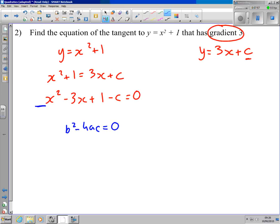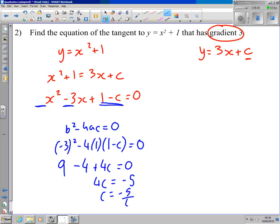So a is 1, b is -3, and c is 1 - c. So it's (-3)² - 4(1)(1 - c) = 0. Breaking out the brackets, that's 9 - 4(1) will be -4, minus 4 times negative c will give me +4c. So that's 5 + 4c. So that's 9 - 4 + 4c = 0, which gives 5 + 4c = 0. Take the 5 to the other side and divide by 4: c = -5/4.